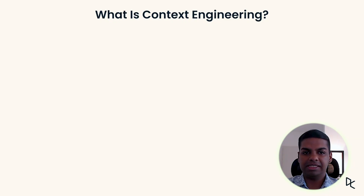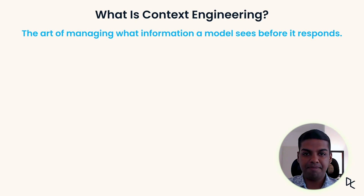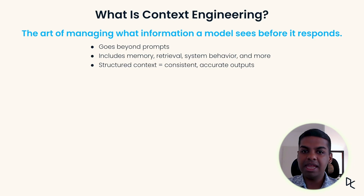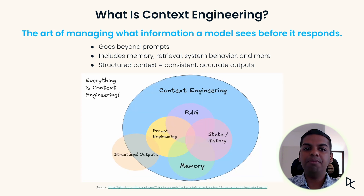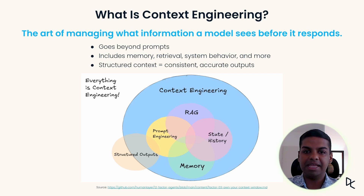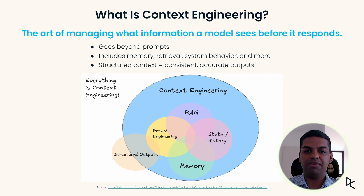So what is context engineering? It is essentially the art of managing what information a model sees before it responds. This includes memory, retrieval, system rules, tool metadata and more. When we structure the context well, the output becomes consistent and accurate. Context engineering is also described as the art of filling the context window with just the right information for the next step — it's about carefully managing everything that the model sees before it generates a response, rather than just being about clever prompts.